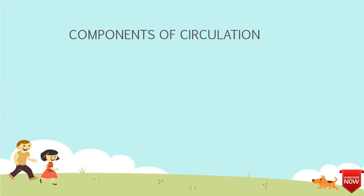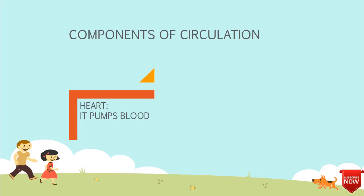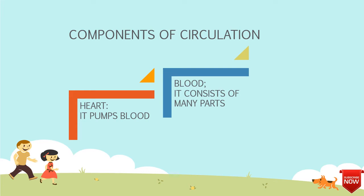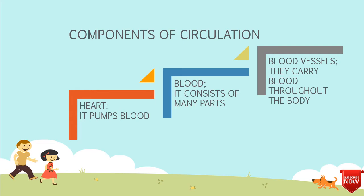Components of circulation. First, the heart — it pumps blood. It is located at the center of the chest, slightly moved to the left, and it is only about the size of a closed fist. Blood consists of many parts: white blood cells, platelets, red blood cells, plasma, and many more. And blood vessels — they carry blood throughout the body.